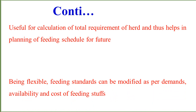Being flexible, feeding standards may be modified as per demand, availability, and cost of feeding stuff. The cost of feeding material really matters — at some places the cost of one thing may be very low, but at other places the same quality material may be much higher. We should make decisions based on the price and economics of production: what to feed, where to source it from, and what type of feed to provide to the animal.